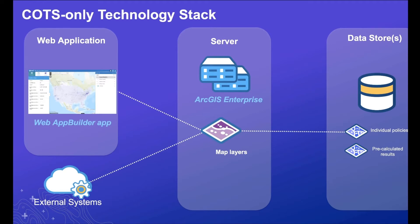Those policy layers would be exposing policy locations stored in some kind of data store — either ArcGIS Data Store or an enterprise database like Oracle, SQL Server, or Postgres. The challenge with this, and the ways in which it breaks down when you have 10 million policy locations, is that your map draw performance is going to be poor because you're querying the database and pulling all of those 10 million locations back up through your entire stack. And then if you want to do the statistics calculations to find the number of policies located within your Hurricane Michael footprint, that's going to take a while — it's not going to happen quickly and you're probably going to get a lot of timeouts.